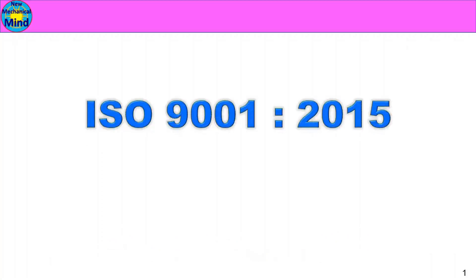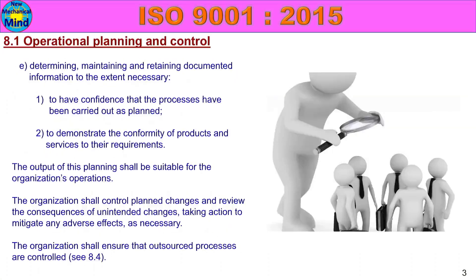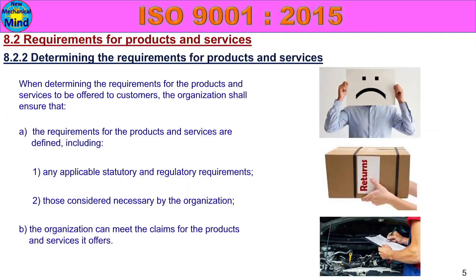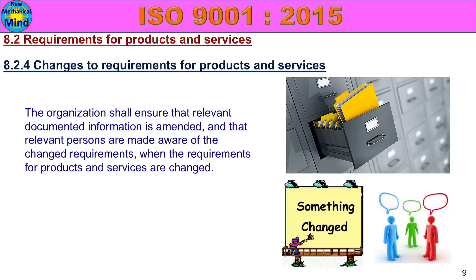In this video, we will see ISO 9001-2015. We will see Class 8, Operation and its subclasses: 8.1 Operational Planning and Control, 8.2.1 Customer Communication, 8.2.2 Determining the Requirements for Products and Services, 8.2.3 Review of the Requirements for Products and Services, and 8.2.4 Changes to Requirements for Products and Services. In this video, we will see all the subclasses in detail.